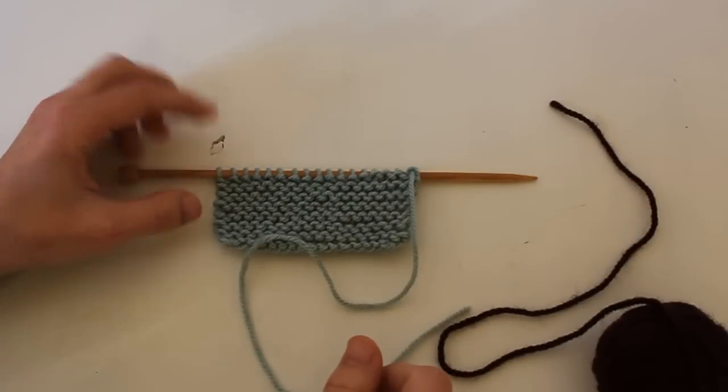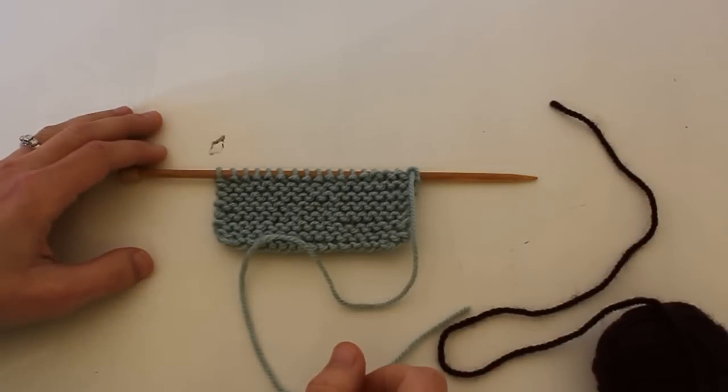Today I'm going to show you how to do a magic knot. This knot is the only way that I use to join a new ball of yarn to my work because it's seamless and practically invisible, and the best part of all is there's no ends to weave in when you're done.